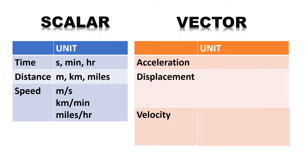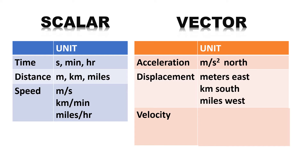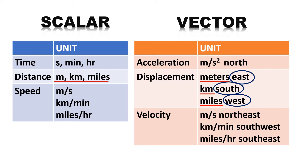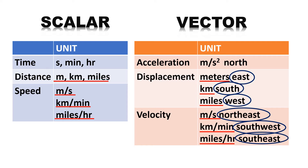Sa vector naman, ang acceleration, displacement, at velocity. Unit for acceleration is meters per second squared north, or east, o kung anumang direksyon — pwede ding forward or backward. Kung titignan maigi, ang unit ng displacement at distance ay parehas lang; ang pinagkaiba, ang displacement ay may direksyon. Gayon din ang unit ng velocity at speed — kung sa speed ay meters per second, ang velocity naman ay meters per second northeast. Sa speed ay kilometers per minute; sa velocity naman, ay kilometers per minute southwest. And miles per hour southeast.